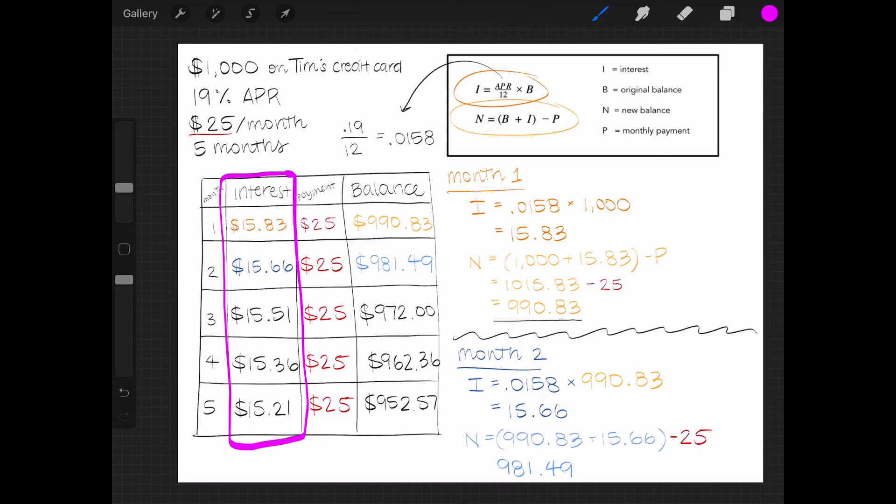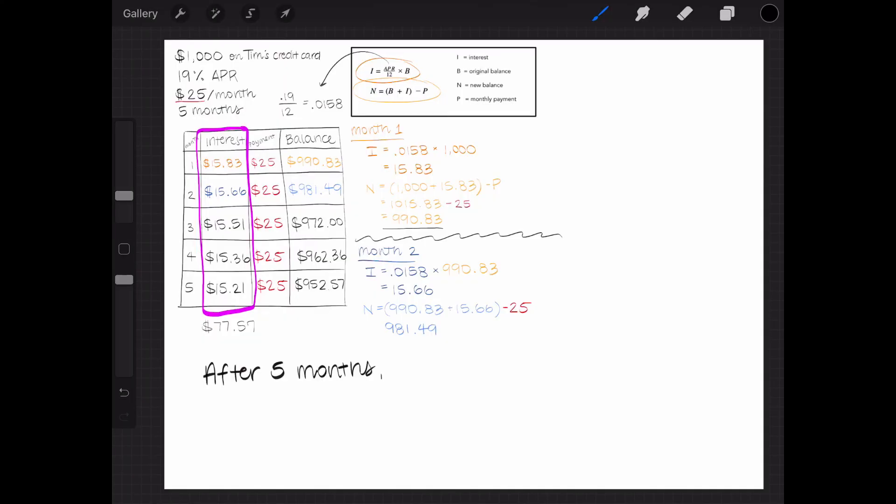So we can add up all the values in the interest column to see how much interest he has paid so far. When we add up all the interest amounts, we get $77.57. After 5 months, Tim will have paid $77.57 in interest and still owes $952.57.